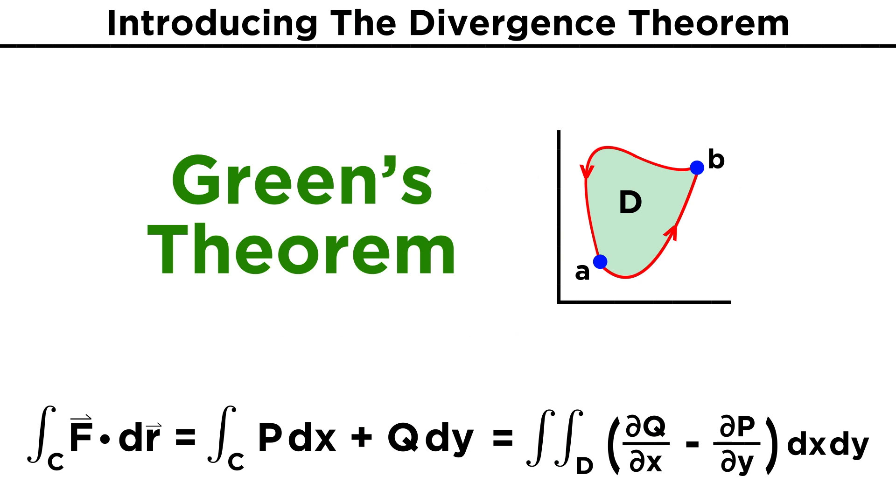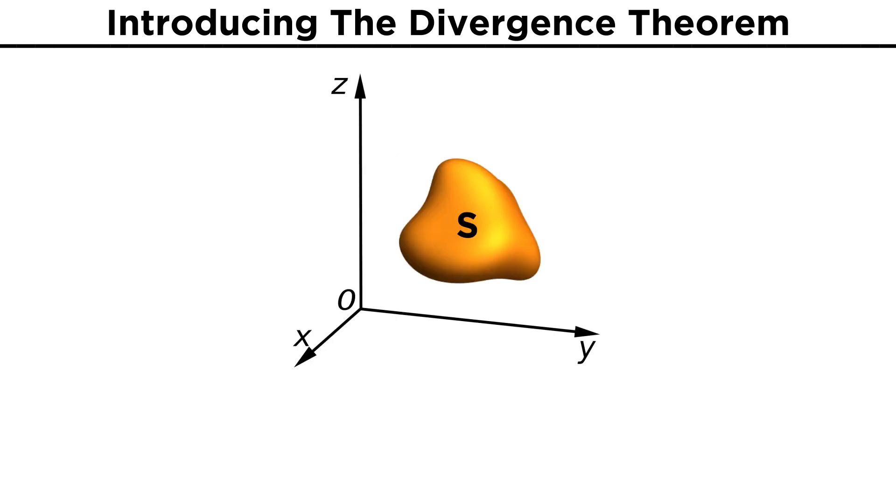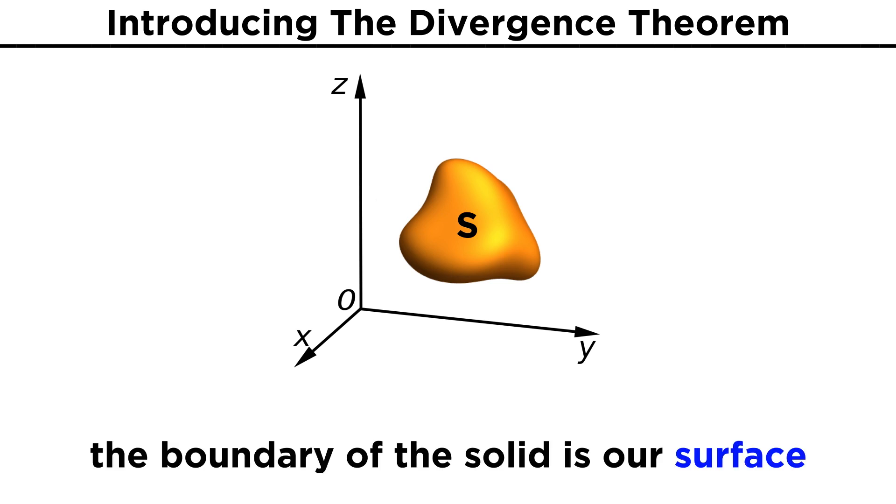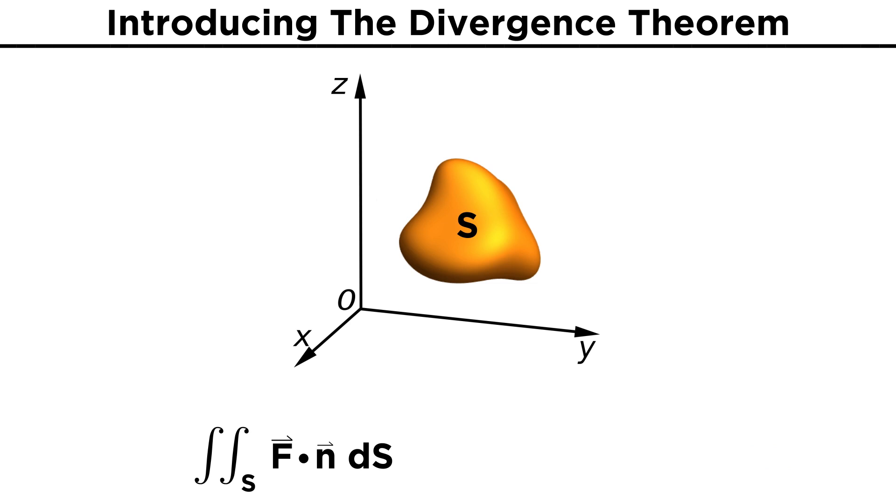Green's theorem gave us an additional method for calculating a line integral around a closed curve. Now we will introduce an additional method of calculating the surface integral for a closed surface S. By this we mean that we have some solid region in space, and its boundary will be our surface. Recall that the surface integral for this will be expressed as the surface integral over S of F dot N dS, where F is some vector field permeating space, and N is the normal vector of the surface.